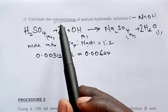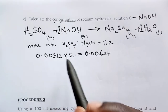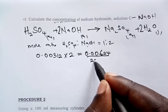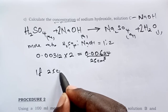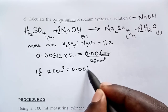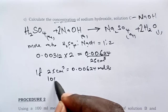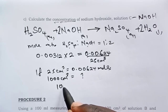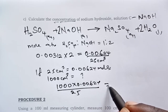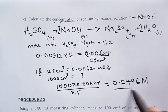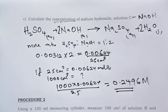These 0.00624 moles of sodium hydroxide were present in the 25 cm³ volume used in the titration. To get concentration, we argue: if 25 cm³ gives 0.00624 moles, then 1000 cm³ gives 1000 × 0.00624 ÷ 25 = 0.2496 molar. Up to this point, we have standardized our sodium hydroxide solution.